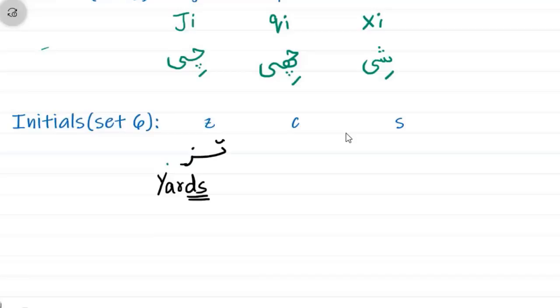The second initial is c. You have to listen carefully. It is quite similar to 'cats.' The last sound, the 'ts' sound in English, is quite similar to this c initial.